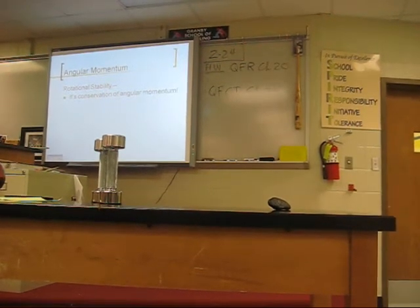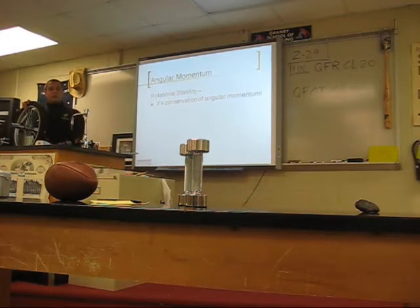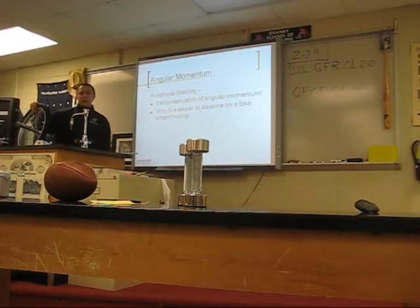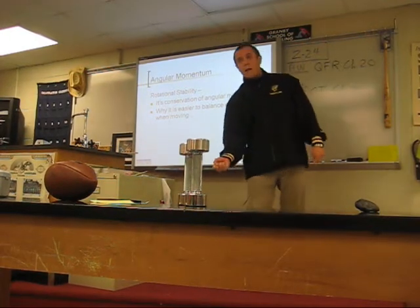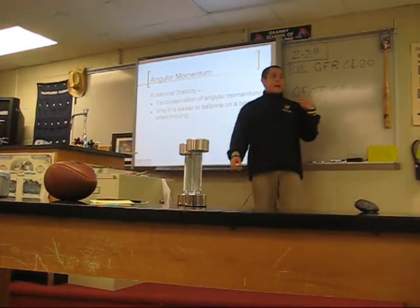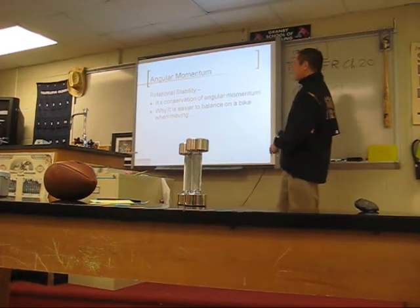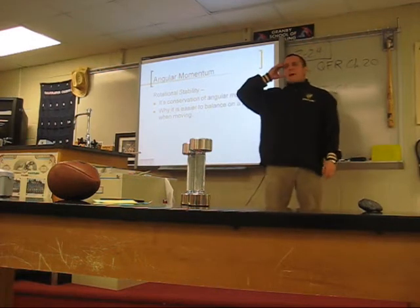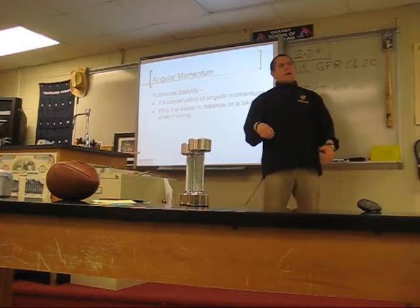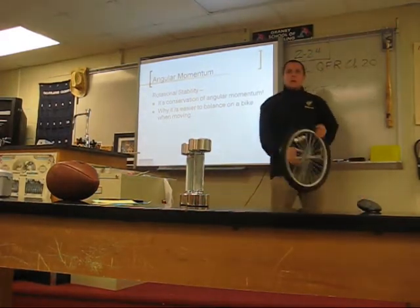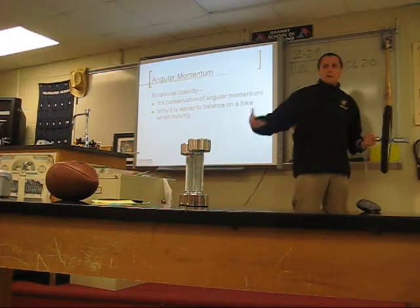This is conservation of angular momentum, and we also call it rotational stability. Rotational stability is conservation of angular momentum. That's why it's easier to ride a bike when you're moving. When your parents got you going on a bike without training wheels and let go, the wheels were spinning — they had angular momentum — and it wanted to stay upright, keep pointing the same direction.